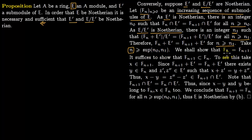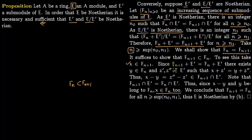We take n as the sup of n0 and n1, and we will show that Fn equals Fn+1. It suffices to show that Fn+1 lies within Fn, since this is an increasing sequence so Fn is already within Fn+1. We start with any element x in Fn+1 and will show x lies within Fn. From the equation Fn plus E prime equals Fn+1 plus E prime, there exists y in Fn such that x and y satisfy a certain relation.